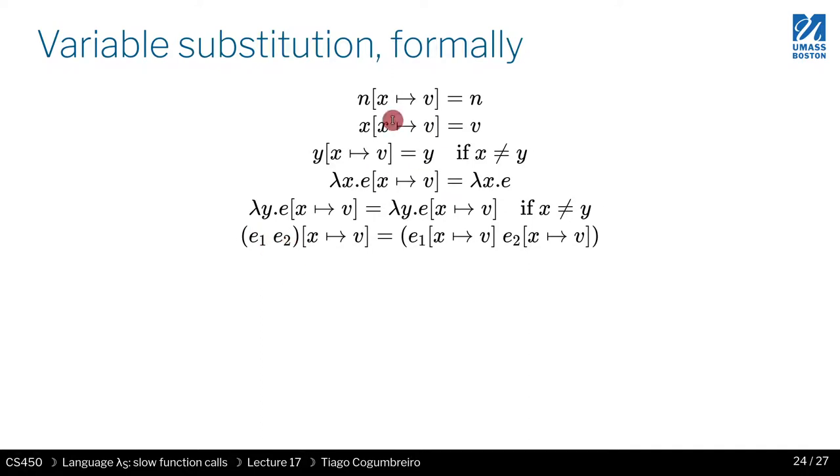So now let's go through each one and I'm going to explain what happens. So if you want to do a find and replace and you find a number, there are no possible variables. So you just return that number. And if you want to do a find and replace of a variable x and you're finding x, you're trying to search for x, well, you just replace it by v.